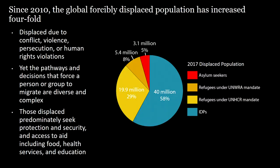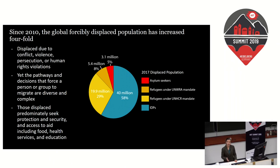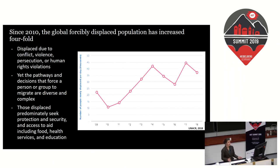Currently, there are over 70 million people forcibly displaced around the world. The majority of that population is IDPs — about 20 million refugees are under UNHCR or UNRWA mandate, but 40 million IDPs are living around the world. People are displaced due to armed conflict, violence, persecution, gender-based violence, and human rights violations. Since 2010, the forcibly displaced population has increased fourfold.